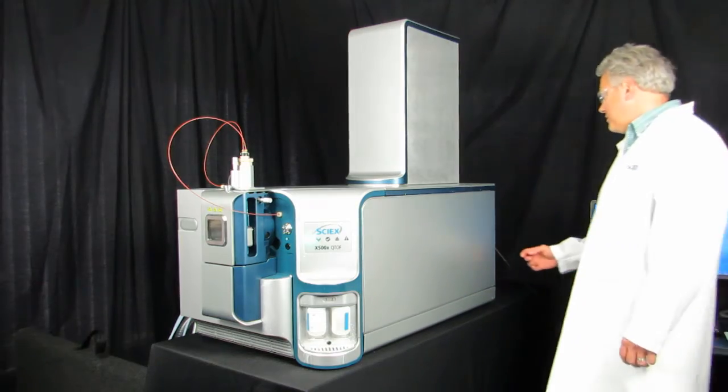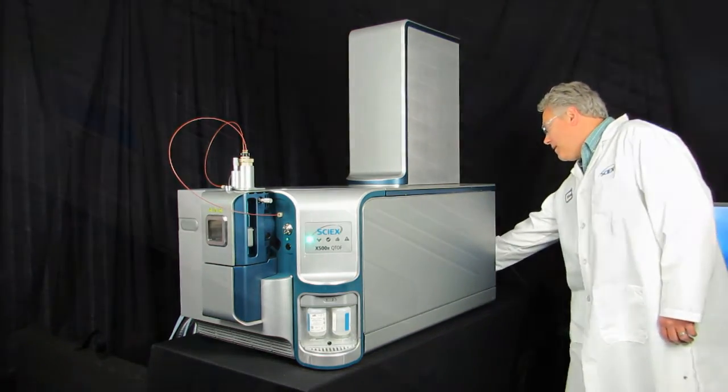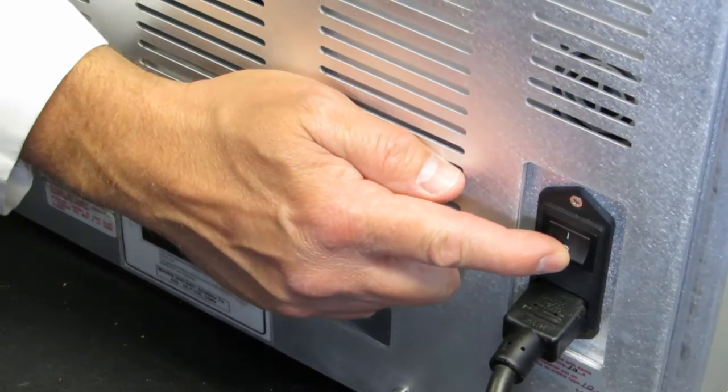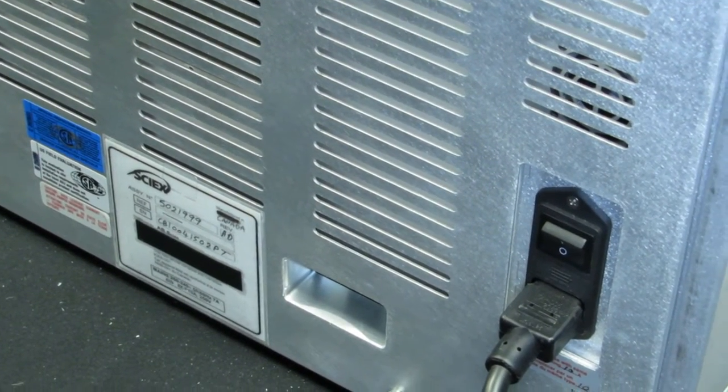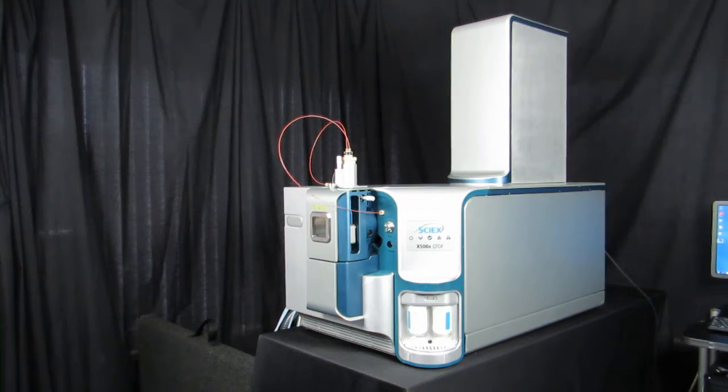Then, turn off the mass spectrometer convenience switch. Turn off the roughing pump.